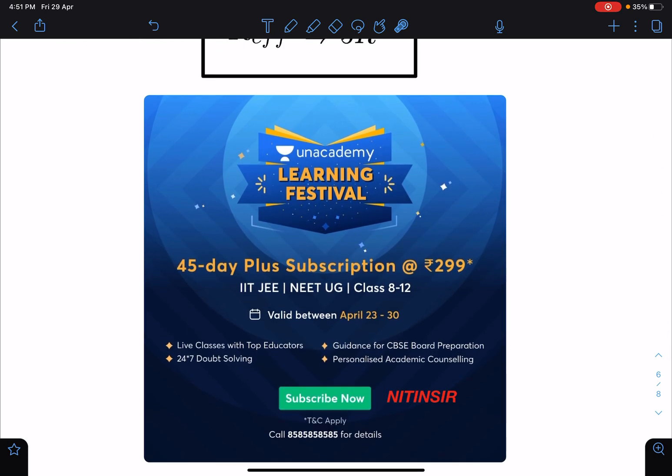And another thing is, as you know already, Unacademy Learning Festival is going on and it is valid till April 30th only. Last two days are left and this is like a one time opportunity where 45 days plus subscription you will get just for 299 rupees for IIT JEE, NEET, and class 8 to 12.